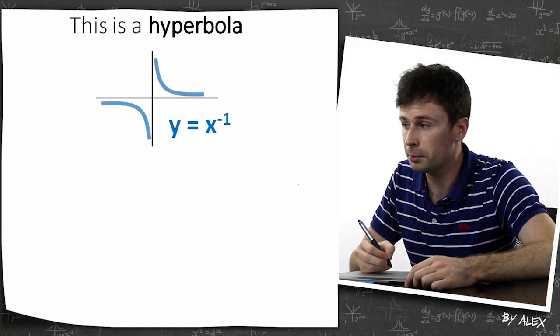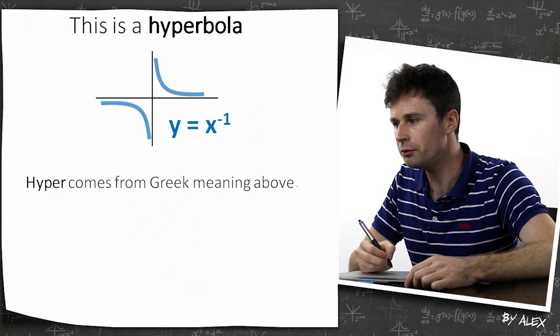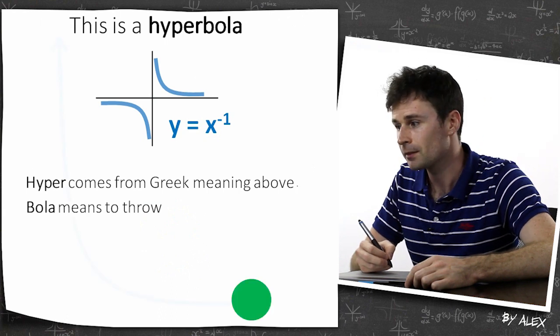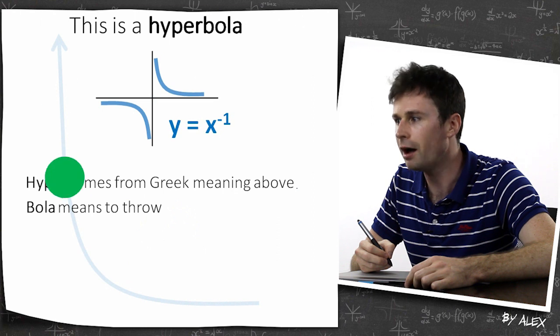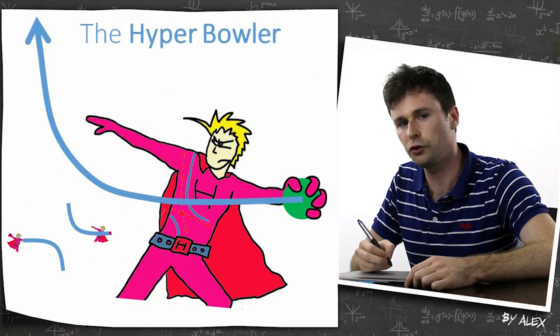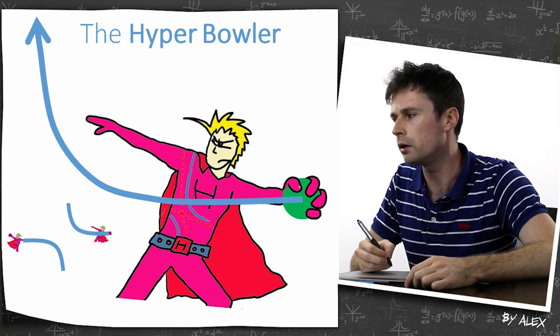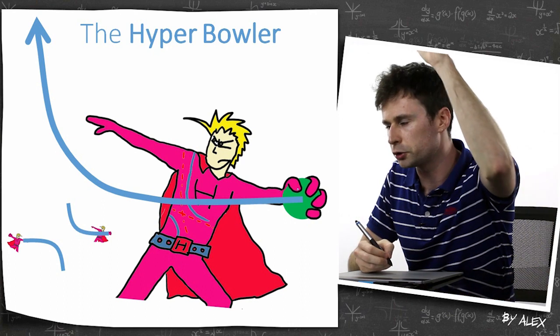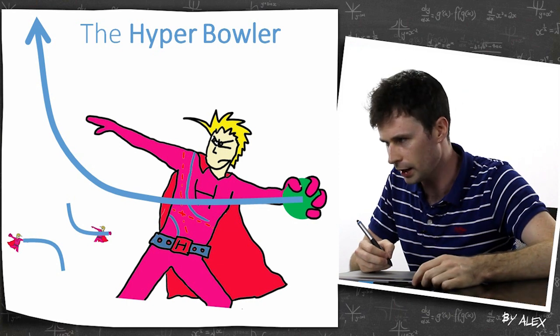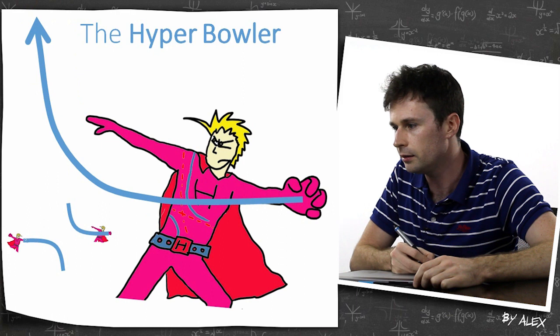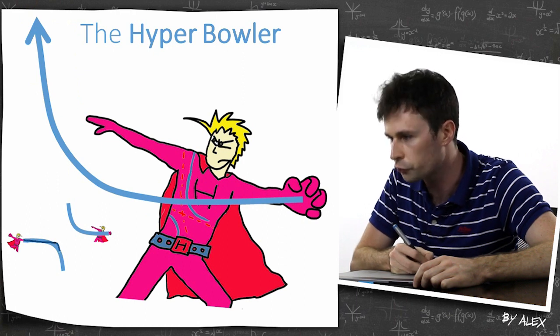This is a hyperbola. Hyper comes from the Greek meaning above, and hopefully you remember from parabola that bola means to throw. So it literally means to throw above. And just to help you remember it, I've created a brand new superhero, the Hyperbowler. This guy can throw stuff straight, and it goes straight up or straight down depending on his mood. Let's see what happens now. Oh, straight up. Boom. But you can also see down here, sometimes he throws it straight and it goes straight down.